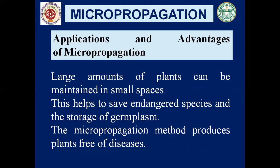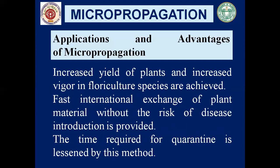Large amounts of plants can be maintained in small spaces, so there is no constraint of space. This helps to save endangered species and enables the storage of germplasm. If any plant species is in an endangered condition, that species can be saved through micropropagation. Additionally, micropropagation produces plants which are free of diseases, and it increases the yield of plants and increases floricultural species.